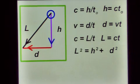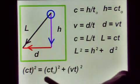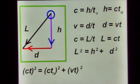Well we've got a right angle triangle here so we can apply pythagoras theorem. L squared equals h squared plus d squared. Or substituting in from the earlier equations ct all squared equals ct not all squared plus vt all squared.